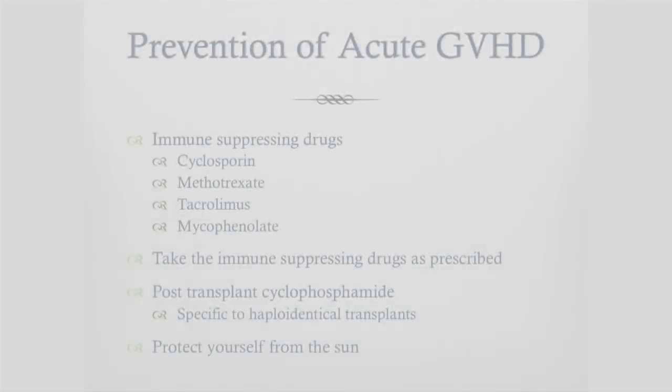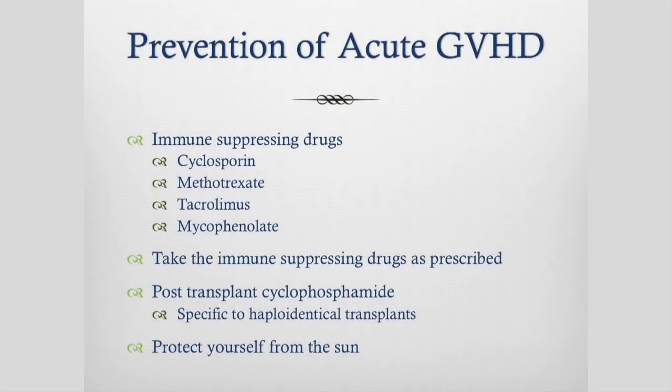For prevention of acute graft versus host disease, ideally we don't want you to have any of this, so we give you medicines to prevent it. The most common immune-suppressing medicines we use to prevent acute GVHD are cyclosporine and methotrexate, and then a couple of others we use fairly regularly are tacrolimus and mycophenolate. It's really important that you take the immune-suppressing drugs as prescribed by your haematologist — if you miss doses or don't take quite as much as prescribed, you're leaving yourself open to getting acute GVHD.